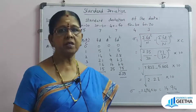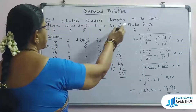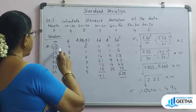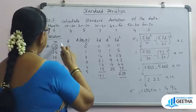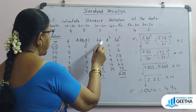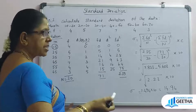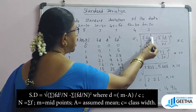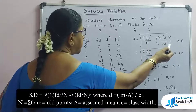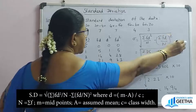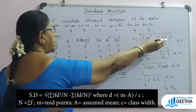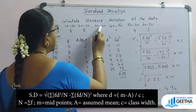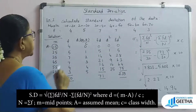Now for the continuous series: calculate standard deviation of the given data. You are given marks as class intervals and frequency. The solution uses the step deviation method. Form a table with columns m, f, d (equals m minus A divided by C), fd, d squared, and fd squared. The midpoints m are: 15, 25, 35, 45, 55, 65. The formula is: sigma equals square root of [(summation fd squared by N) minus (summation fd by N) the whole square], multiplied by C.